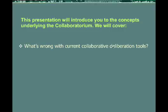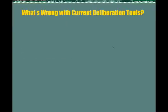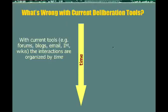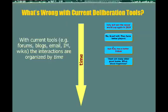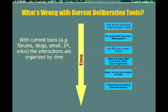We will cover what's wrong with current collaborative deliberation tools and how the Collaboratorium can help. So what is wrong with current deliberation tools? These include such systems as forums, blogs, email, instant messaging, wikis, and so on. In all of these systems, the interactions within them are organized by time, so people will make posts and other posts will be made in response to them right after another. And this results in several important problems.